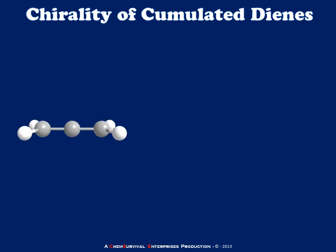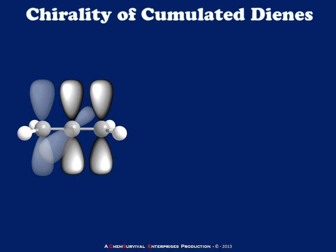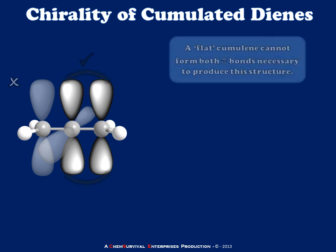As we look along the molecule from the edge, and we attempt to construct two pi bonds to the central atom, we should immediately notice a problem. Although one pi bond is capable of forming, in this case as depicted on the right, the other pi bond on the left hand side cannot form because the associated p atomic orbitals are oriented 90 degrees from one another.